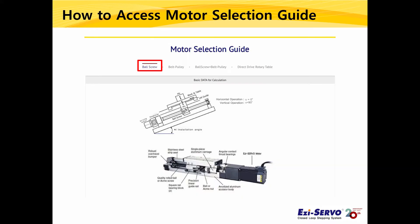If you go to the motor selection guide screen, you can select from four types of systems. The current system is a ball screw system, so select ball screw and you will see a screen like this.